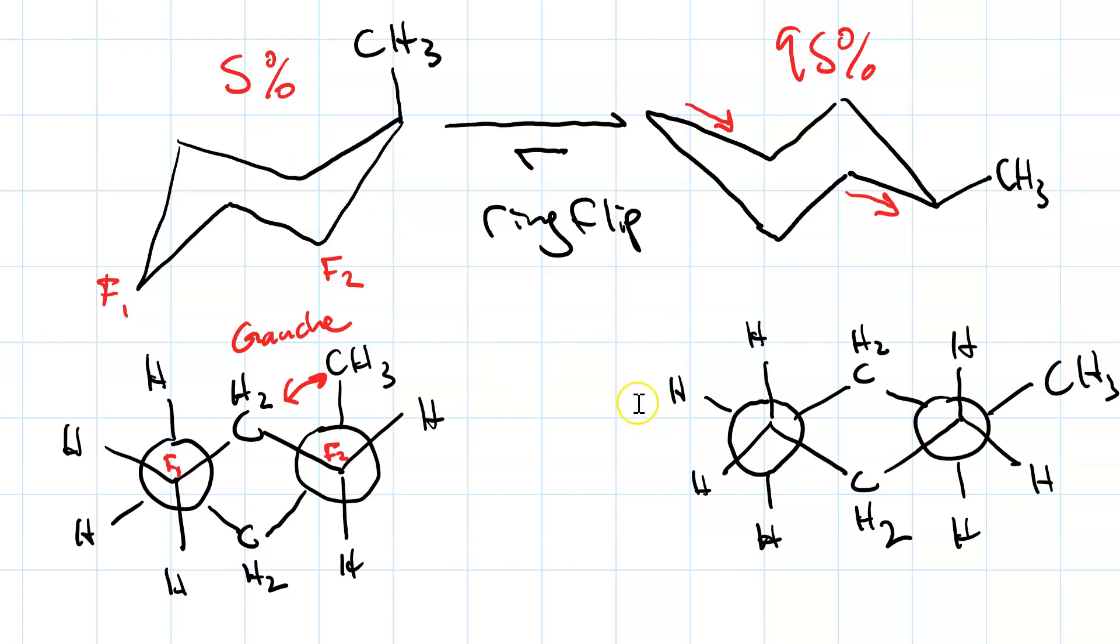So this is your other Newman projection. This front carbon here is this carbon here. The back carbon has that equatorial methyl group. And now you can see it's pointing outward, and there is no Gauche interaction. So it's that Gauche interaction that destabilizes things. And we call this a 1-3-diaxial interaction.